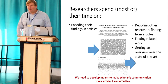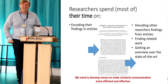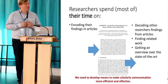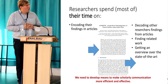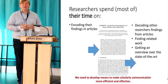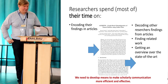Researchers spend most of their time encoding findings in articles, and then decoding other researchers' findings from articles. We have to find related work, get an overview of the state of the art — this is really cumbersome and time consuming. Everyone uses different terminology, and you have to understand categories and organize information. It's all in the minds and heads of researchers but not made explicit. Sometimes survey articles try to organize this, but it's a waste of time. We need more efficient and effective scholarly communication.